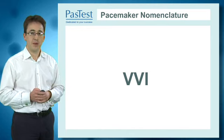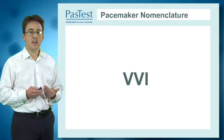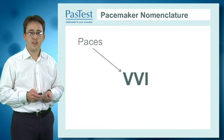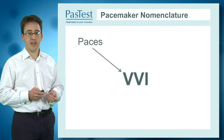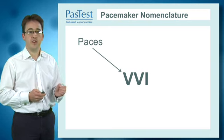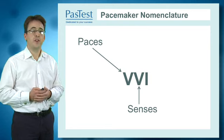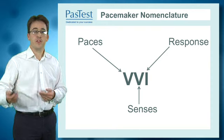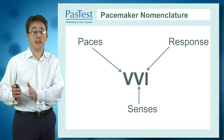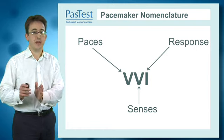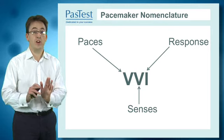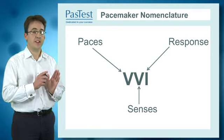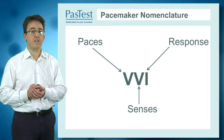We know how a pacemaker is programmed by the nomenclature recorded in the notes. Let's start with the simplest: a VVI pacemaker. The first letter V refers to which chambers are paced — as this is a single chamber pacemaker, it paces the ventricle. The middle letter V refers to sensing — it's sensing the ventricular lead only. The I at the end refers to its response: this pacemaker has the ability to inhibit pacing. So if it detects a normal conducted ventricular QRS complex, it says it doesn't need to pace, and waits for the next beat, thereby facilitating intrinsic conduction wherever possible.